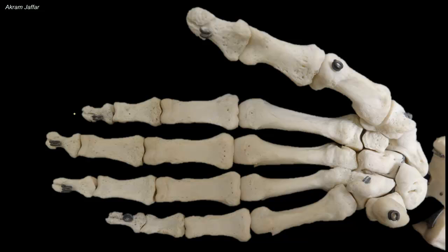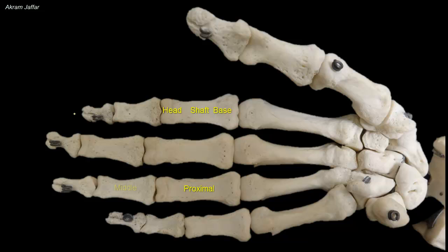Each digit or finger has three phalanges, except for the thumb, which has two phalanges only. Each phalanx is a long bone in the sense that it has a proximal base, a shaft or body, and a head distally. The proximal phalanges are the largest, the middle ones are intermediate in size, and the distal ones are the smallest. The terminal phalanges are flattened and expanded at their distal ends, which underlie the nail beds.